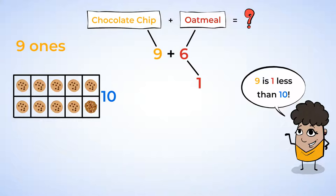You can take one from the oatmeal cookies to make it a 10. You have six oatmeal cookies, so if you take one away, then you will have five more, because one plus five is six. Now you can make a 10 because nine plus one is 10.